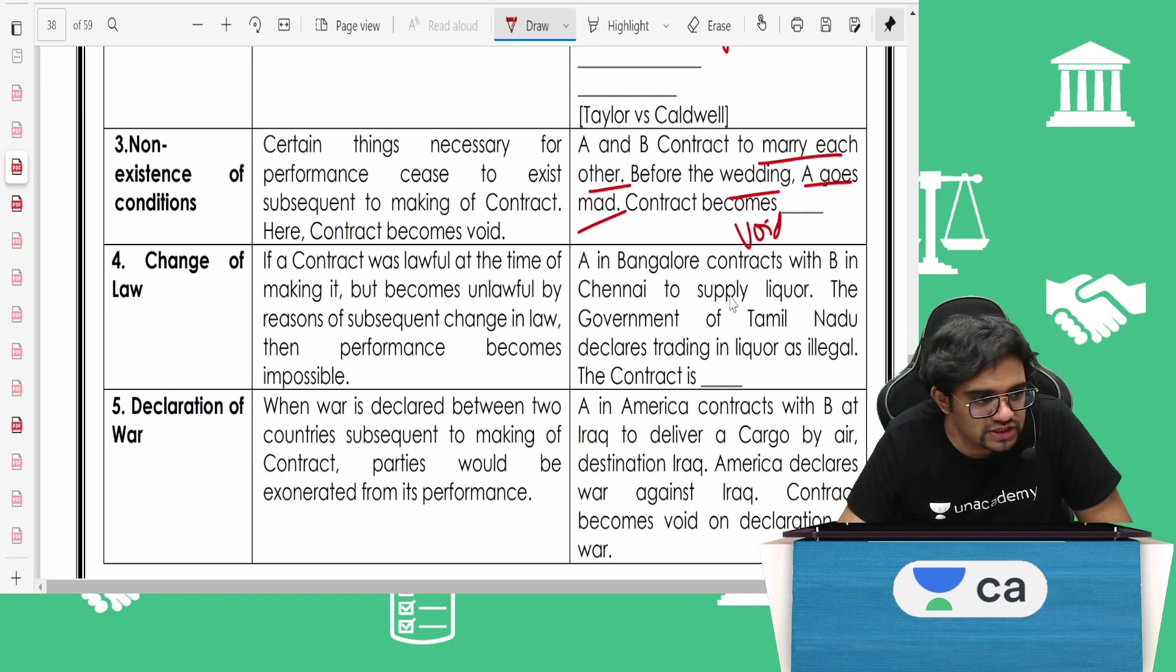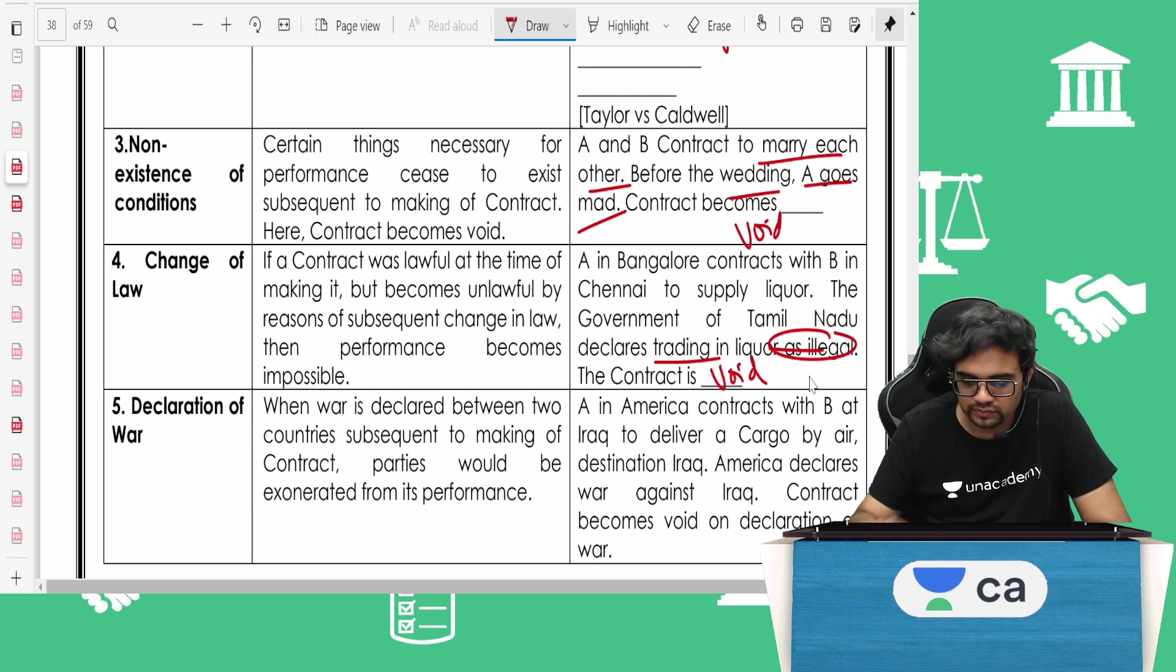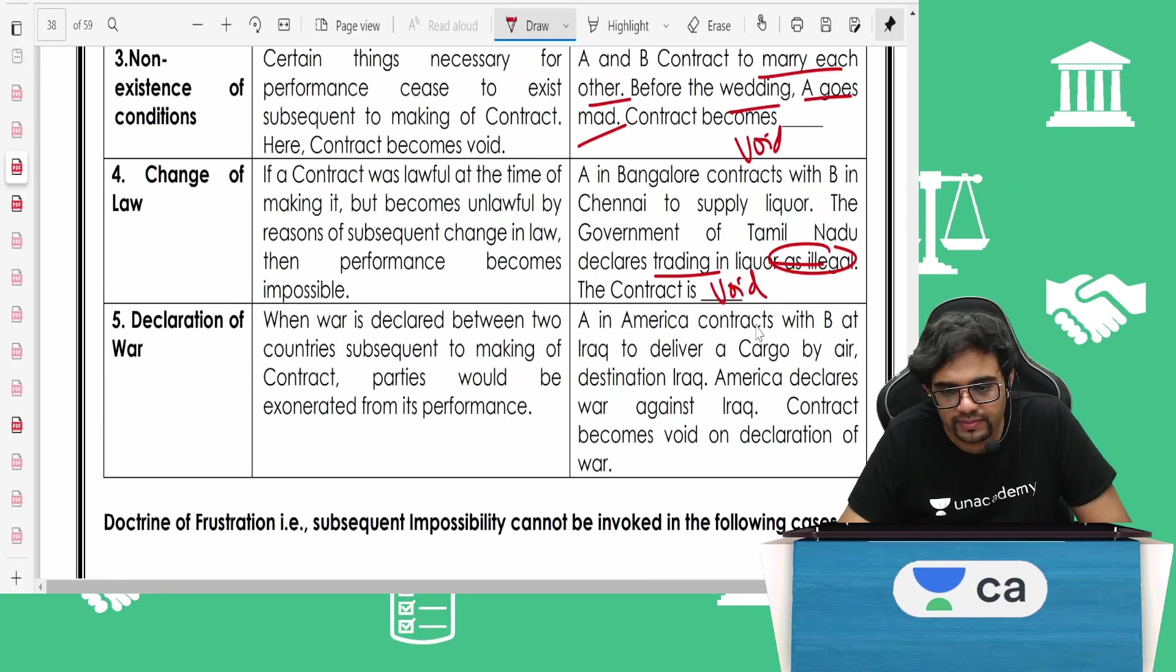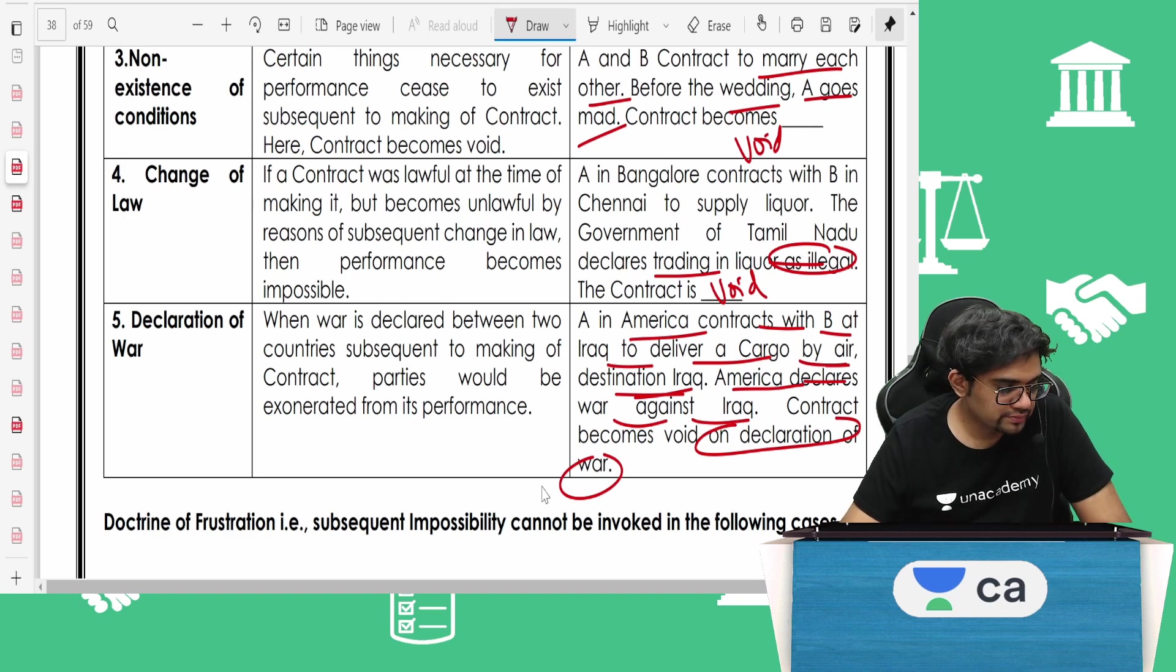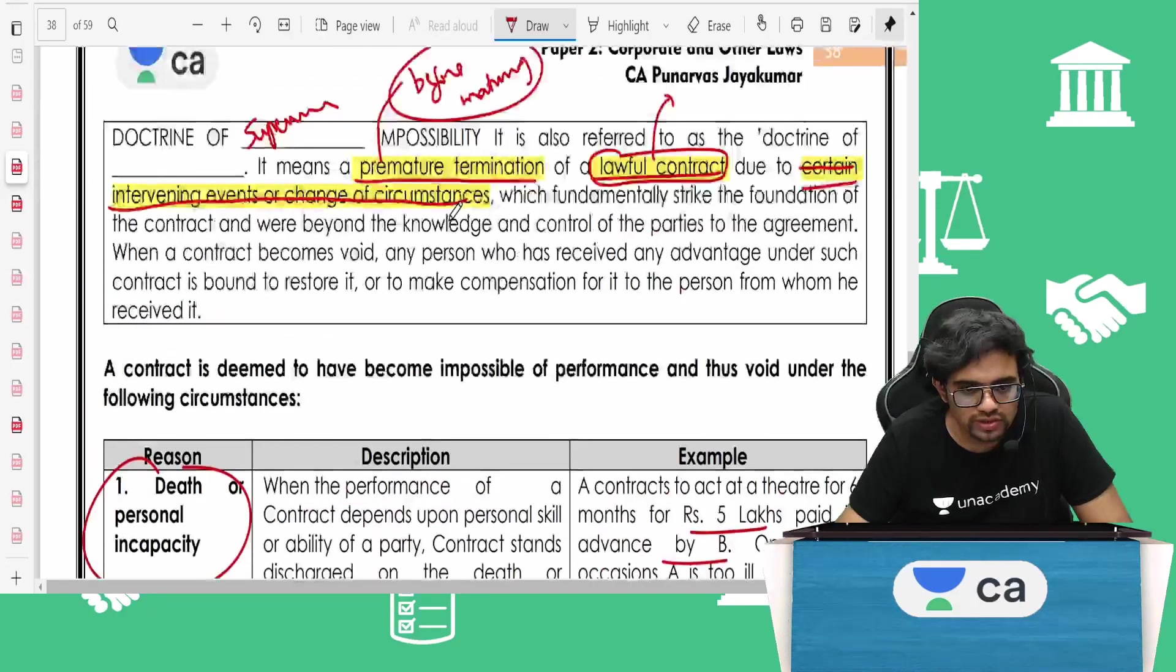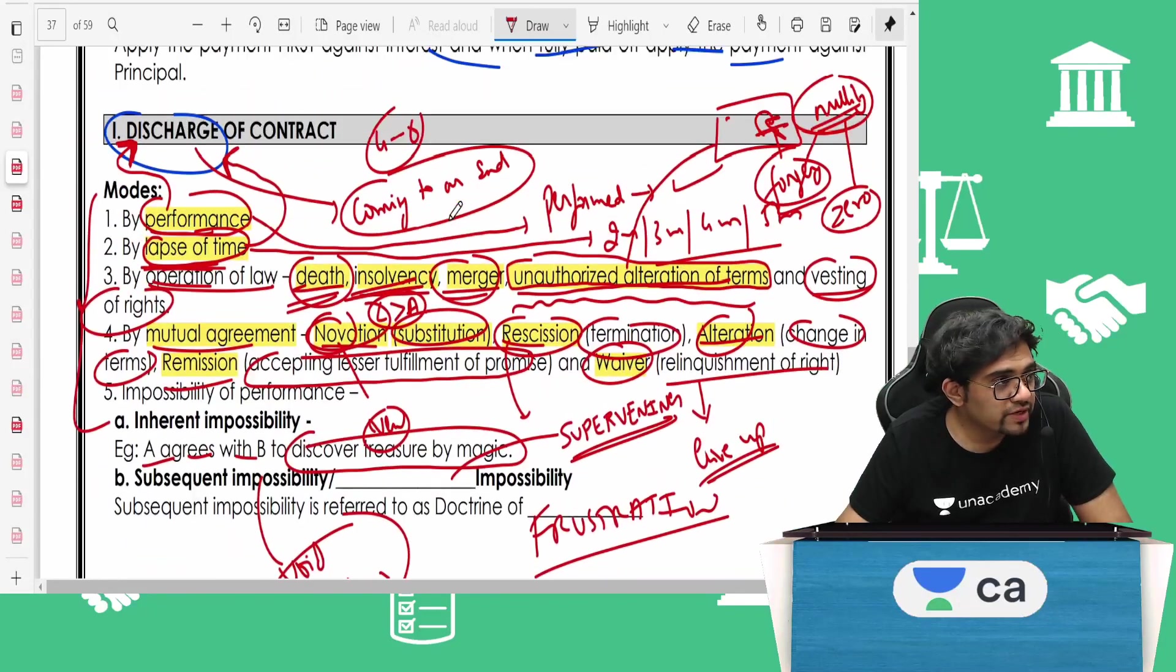A in Bangalore contracts with B in Chennai to supply liquor. The government of Tamil Nadu declares trading in liquor as illegal. Obviously contract becomes void, superveningly impossible. Declaration of war. A in America contracts with B at Iraq to deliver a cargo by air, destination Iraq. America declares war against Iraq. Contract becomes void on declaration of the war. Very simple. Initially valid, later void. These are all the examples of doctrine of supervening impossibility.